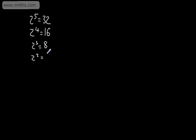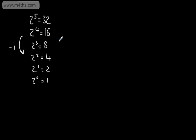We built up the powers of 2. We had 2 to the power of 5, that was 32. 2 to the power of 4 gave us 16. 2 to the power of 3, or 2 cubed, was 8. 2 squared, or 2 to the power of 2, was 4. 2 to the power of 1 gave us 2. After this, we saw that 2 to the zero gave us 1. We were subtracting a power on the left-hand side, and on the right-hand side, we were dividing by the base, which is 2.